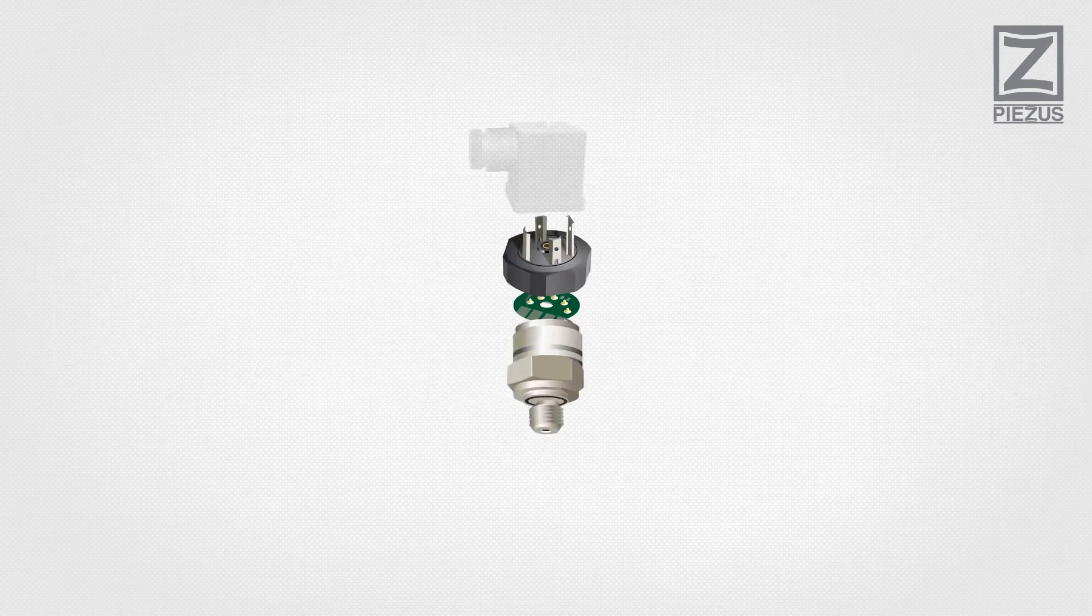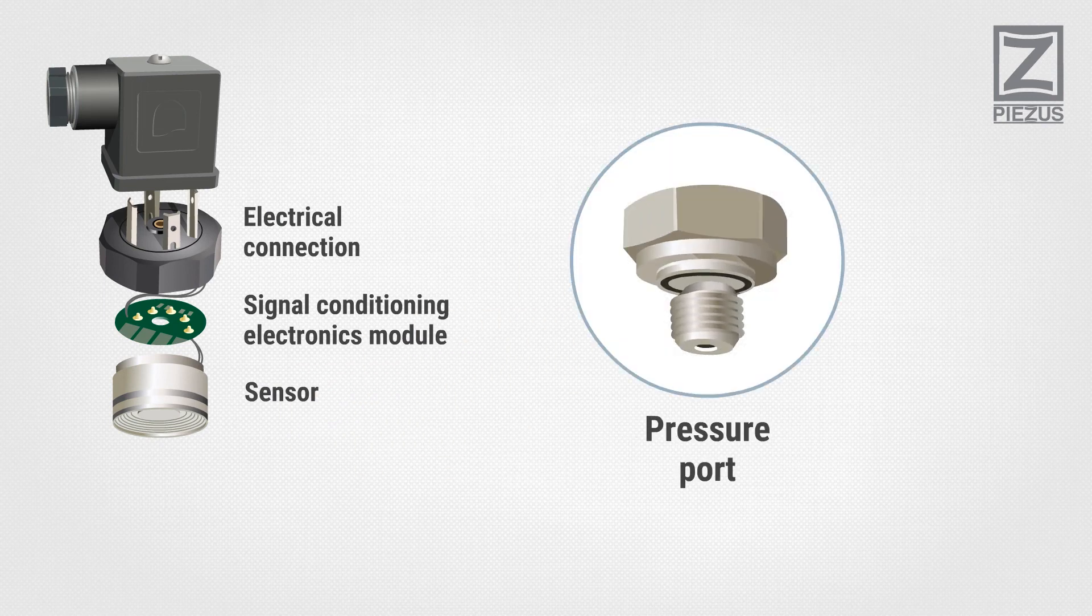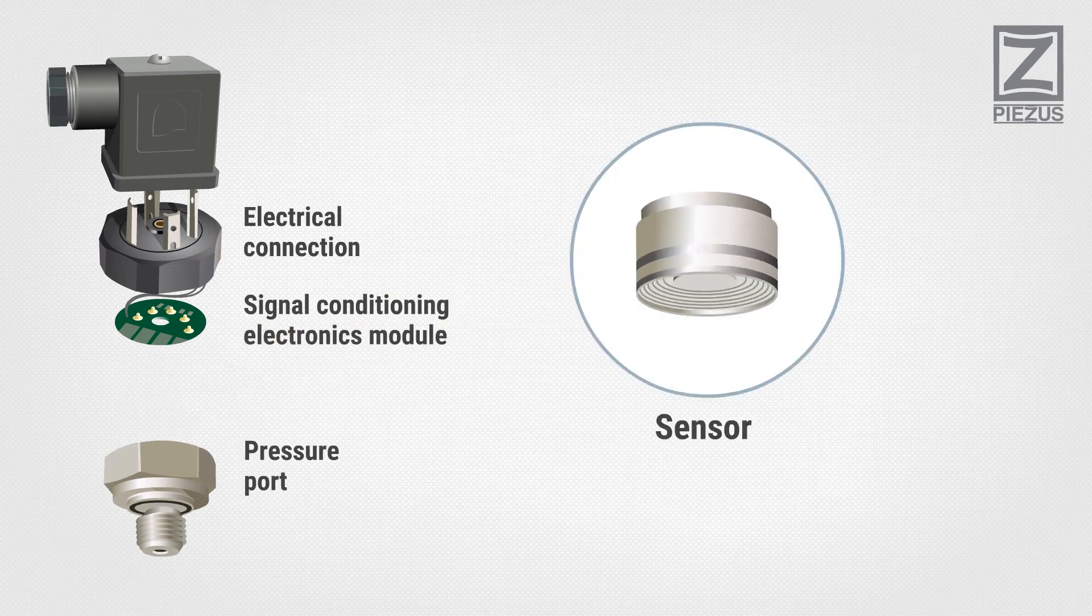What is inside of a pressure transmitter? Pressure ports allow connecting of a pressure transmitter to the process. Sensor element transforms diaphragm deformation under pressure into electrical signal.